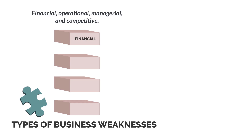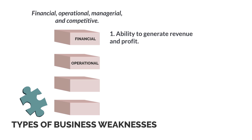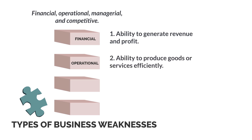Financial weaknesses are typically related to the company's ability to generate revenue and profit. This could be due to high costs, low prices, or poor financial management. Operational weaknesses can hamper a company's ability to produce goods or services efficiently. This could be due to inefficient processes, outdated technology, or lack of skilled workers.